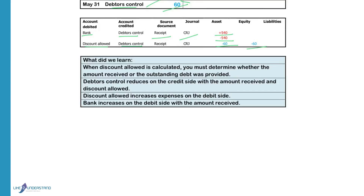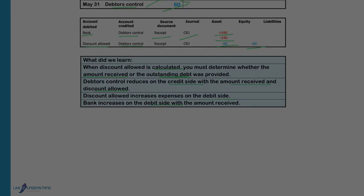What did we learn? When discount allowed is calculated, you must determine whether the amount received or the outstanding debt is provided. The debtors control account reduces on the credit side with the amount received from the debtor and the discount allowed. Discount allowed is the expense that will increase on the debit side. Bank increases on the debit side with the total amount deposited into the bank account.